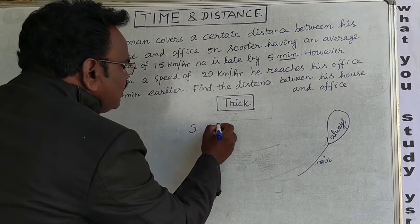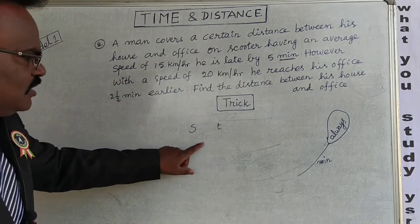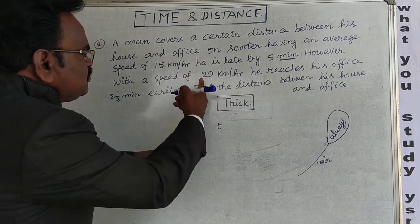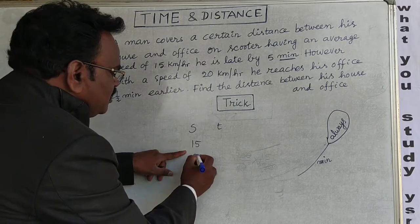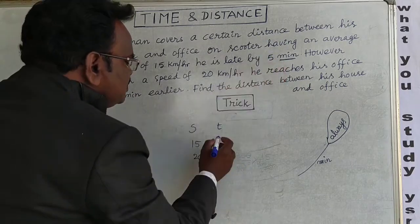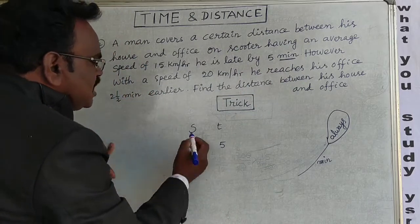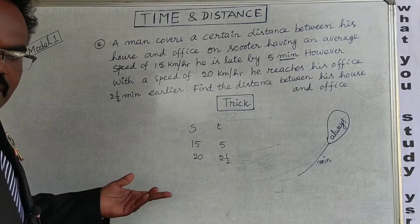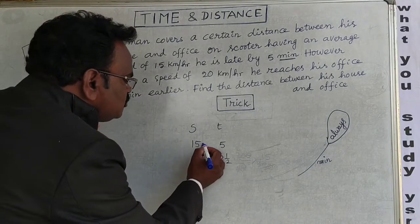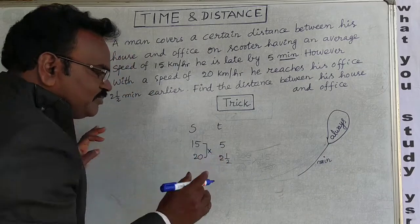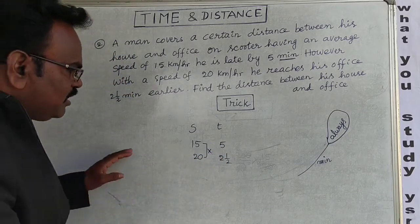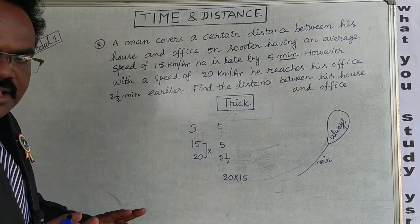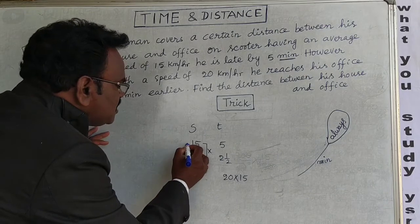Tricky method again. Write the speeds: 15 km/h and 20 km/h. Write the times: 5 minutes and 2.5 minutes. First, multiply the two speeds: 20 × 15 = 300. Then find the difference of the speeds: 20 − 15 = 5.